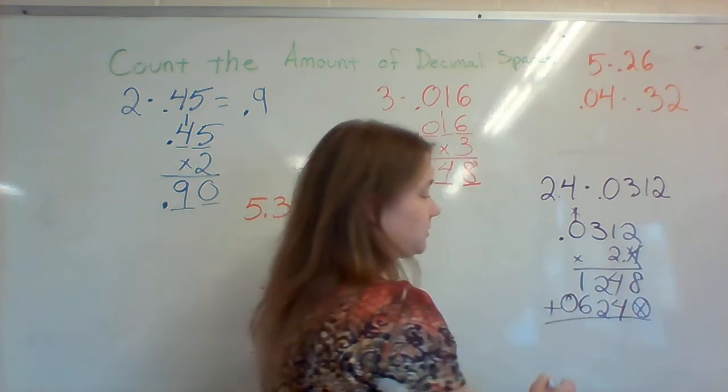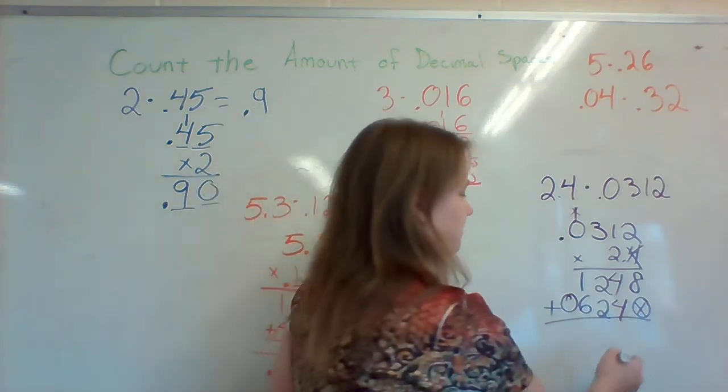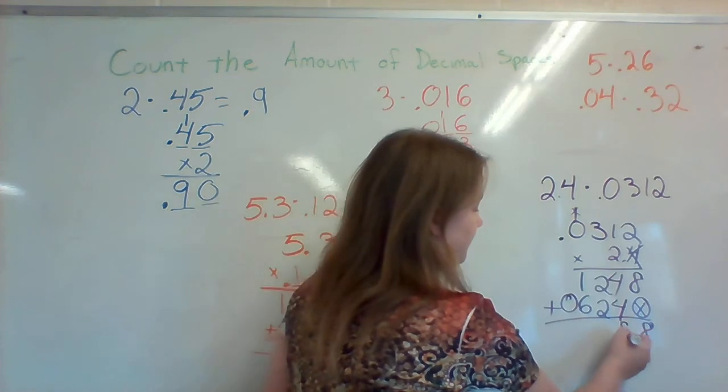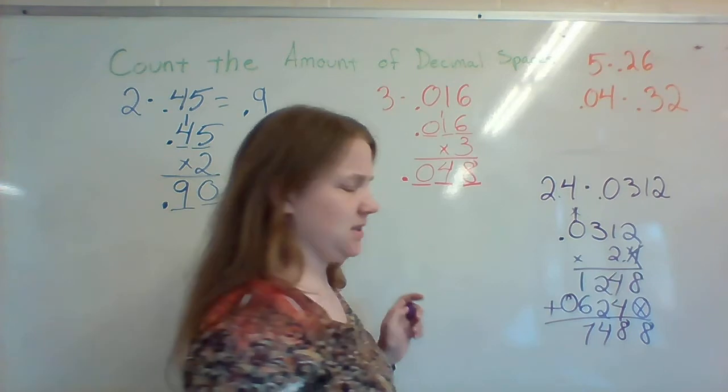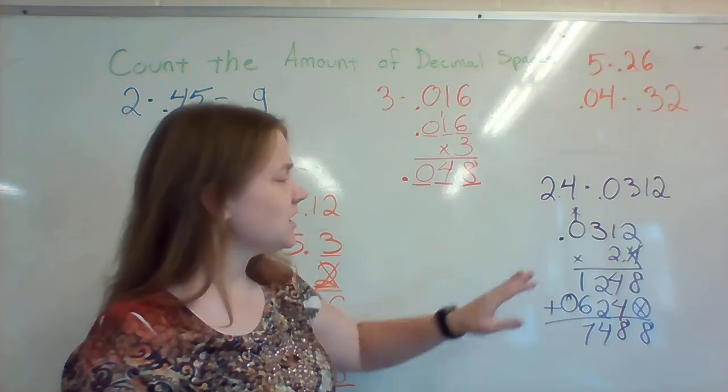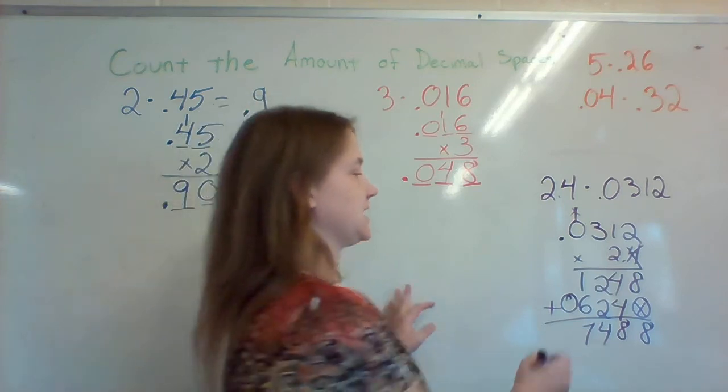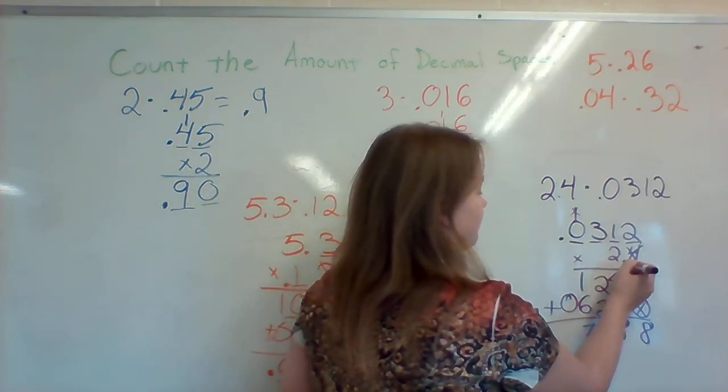So when I add these numbers up, 8 plus 0 is just 8. 4 plus 4 is another 8. 2 plus 2 is 4. 6 plus 1 is 7. We don't really need the 0 in there right now. So let's go ahead and count the amount of numbers after the decimal. I see 1, 2, 3, 4, 5.